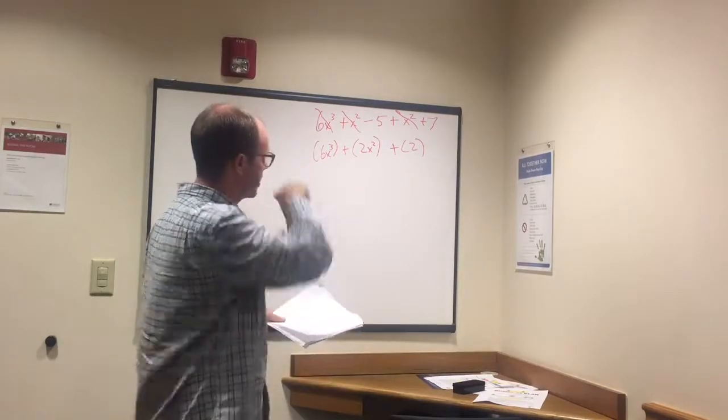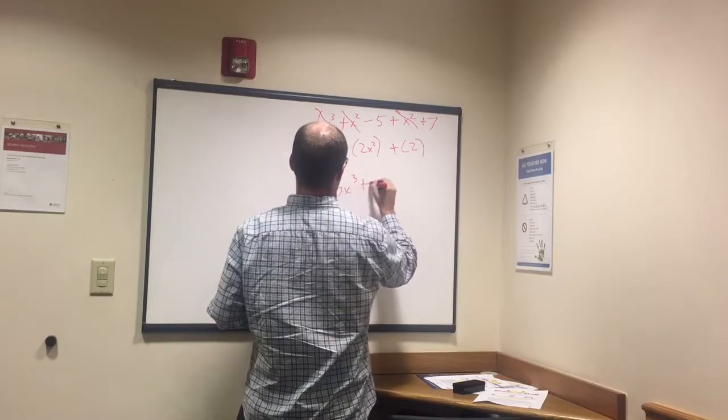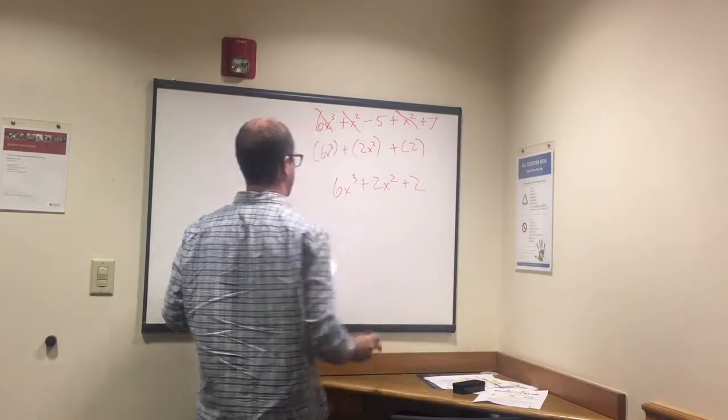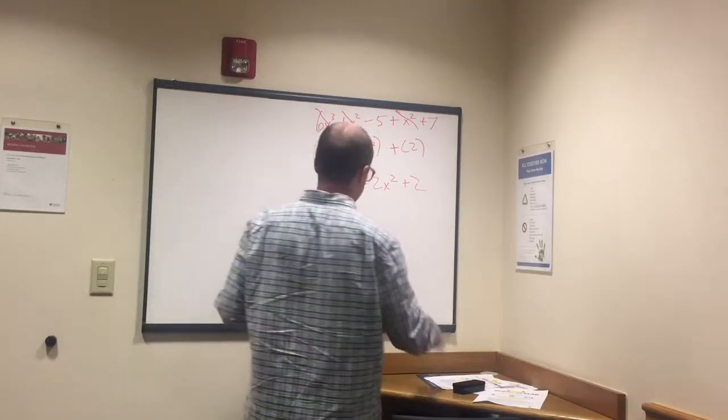And that's our answer. Usually it'll be written out without the parentheses around it like that: 6x to the third plus 2x squared plus 2.